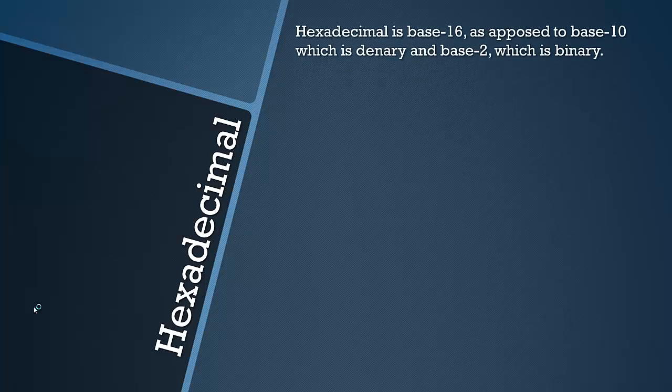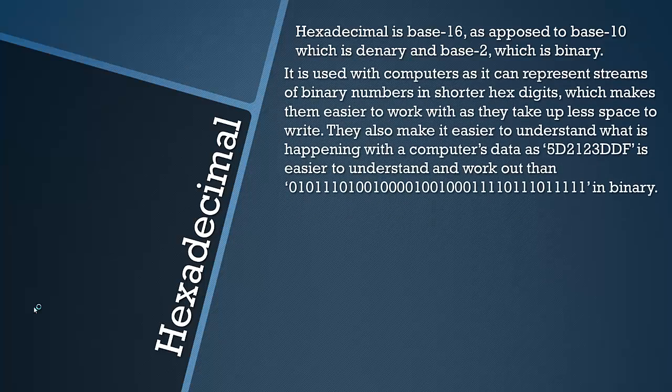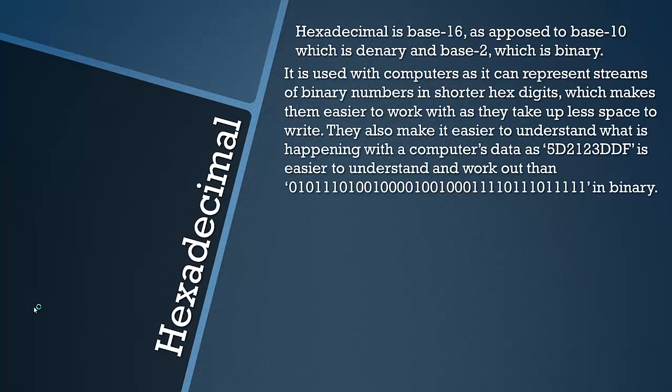Finally, let's have a look at hexadecimal now. Hexadecimal is base-16, as opposed to base-10 which is denary or decimal, and base-2 which is binary. Its use with computers is that it can represent streams of binary numbers in shorter hex digits. It basically shortens everything, which makes them easier to work with as they take up less space to write or view, and they also make it easier to understand what is happening with computers' data. For example, this long hex number is far easier to understand than this extremely long binary number.